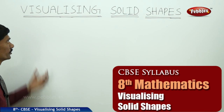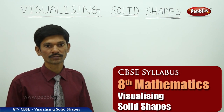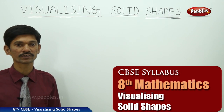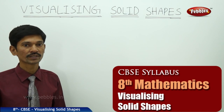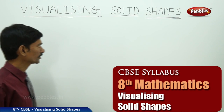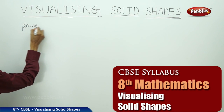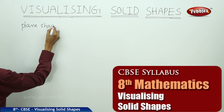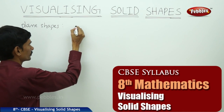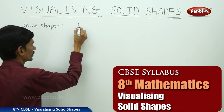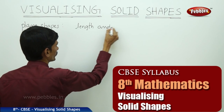Now let us start the next topic: Visualizing Solid Shapes. Now what are the solid shapes? You are already familiar with some plane figures and some solid shapes from your earlier classes. Now what are the plane shapes? The plane shapes are those which have only two measurements, like length and width.